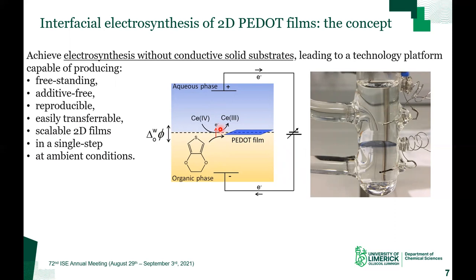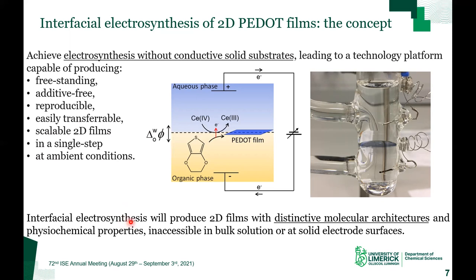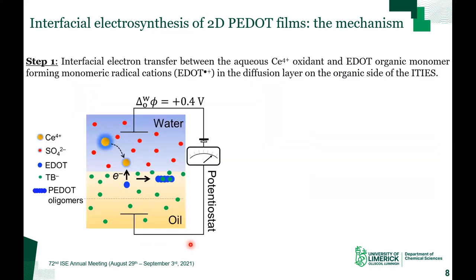Previous work has been carried out in this field by the groups of Kanan, Marashek, and Dreyf, and these all provided some nice early insights into electropolymerization or electrosynthesis at electrified aqueous-organic interfaces. A key aspect of interfacial electrosynthesis is that it will produce 2D films with distinctive molecular architectures and physiochemical properties that will be inaccessible in bulk solution or at solid electrode interfaces. We have broken down the mechanism of PEDOT thin film interfacial electrosynthesis into five distinct stages, which I'll now present in the next five slides.